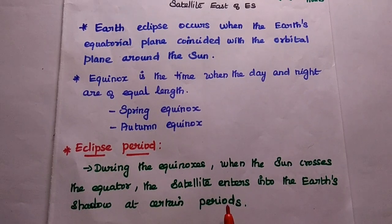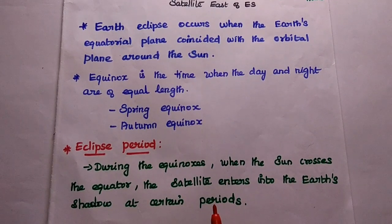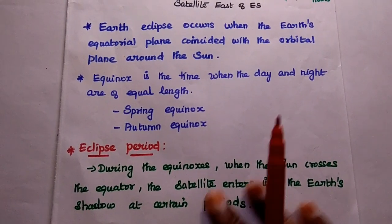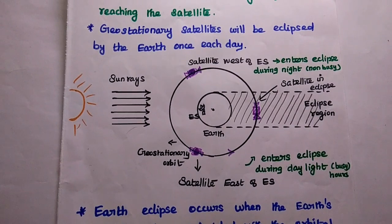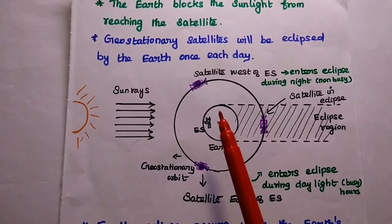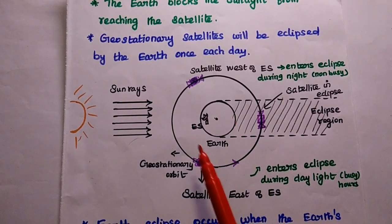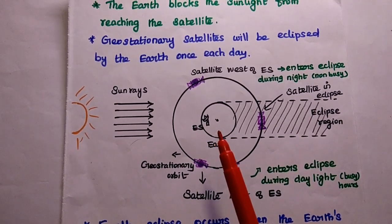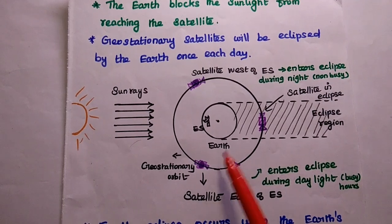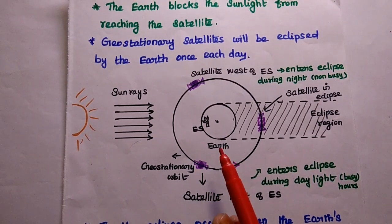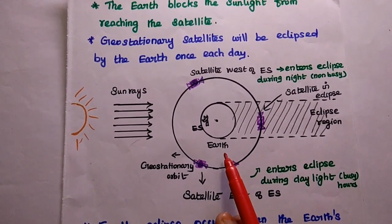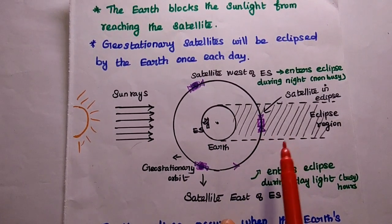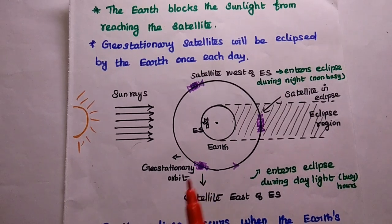Eclipses begin 23 days before equinox and end 23 days after equinox. If the equatorial plane of the earth is tilted at an angle of 23.4 degrees with respect to the ecliptic plane, then we can keep the satellite in clear view with respect to the sun.